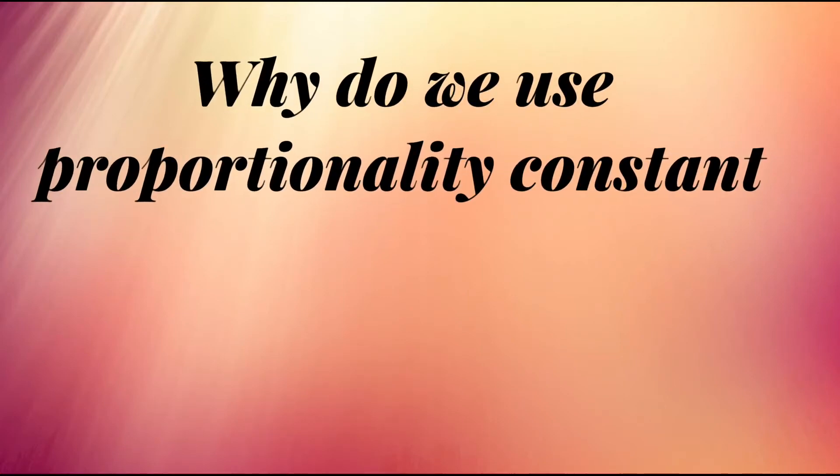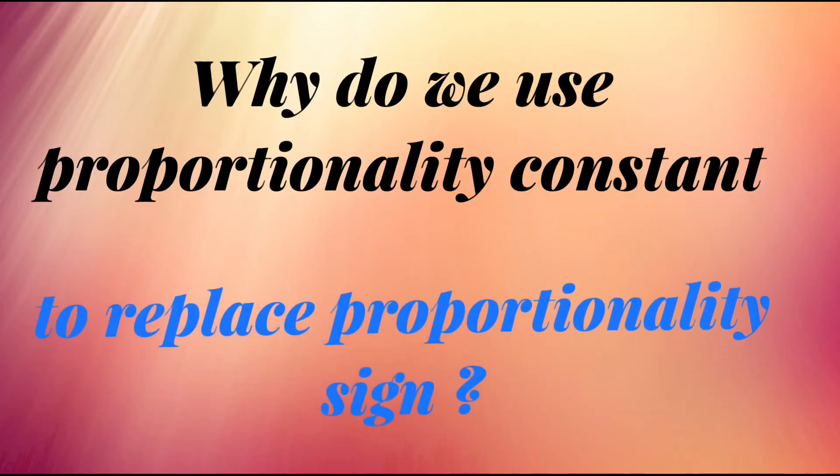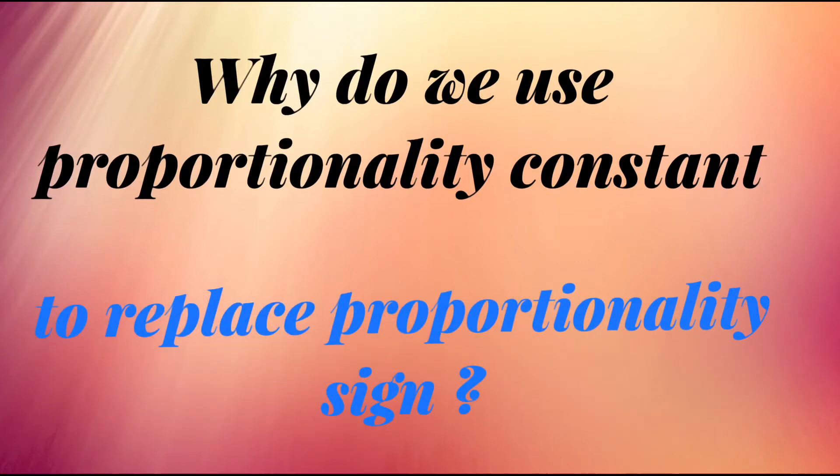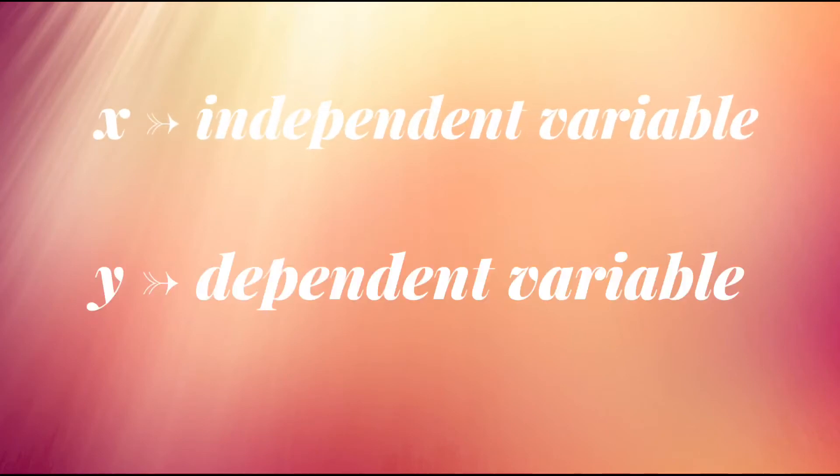Why do we use proportionality constants to replace proportionality signs in proportionality relations? There are two types of variables which can be denoted by x and y: independent variable x and dependent variable y, where the dependent variable changes with different values of the independent variable.